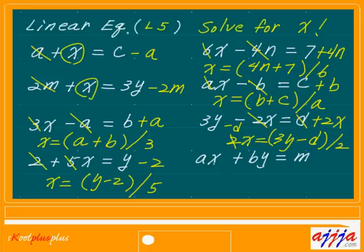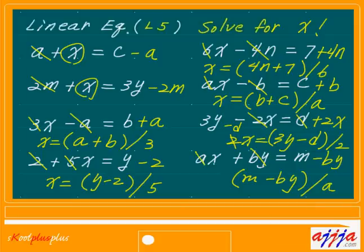What about this one? Scratch this one, then minus b·y. Then m minus b·y — whole thing over — scratch a — divided by a. That's what x is: x equals m minus by over a.